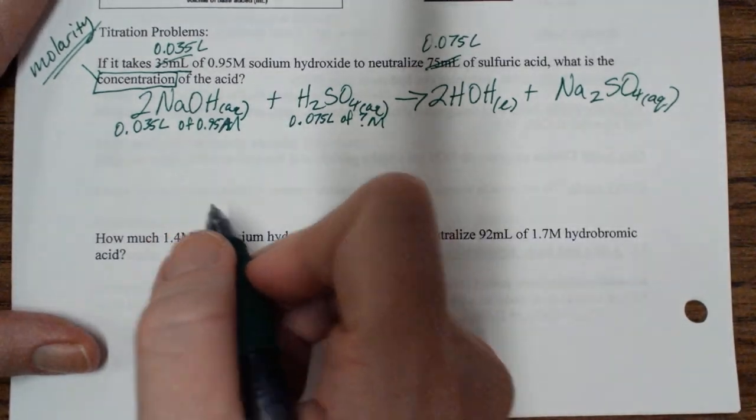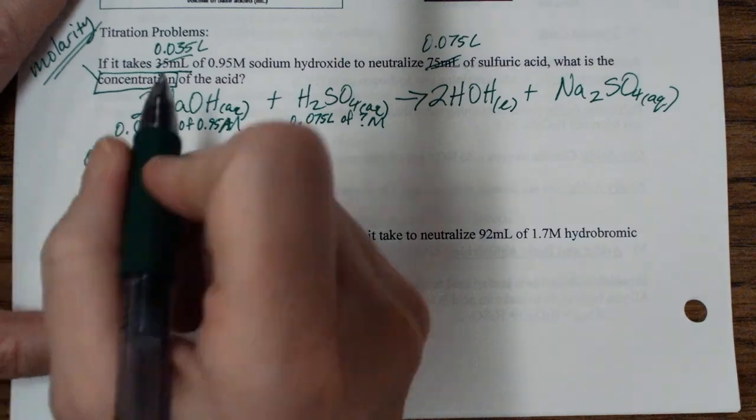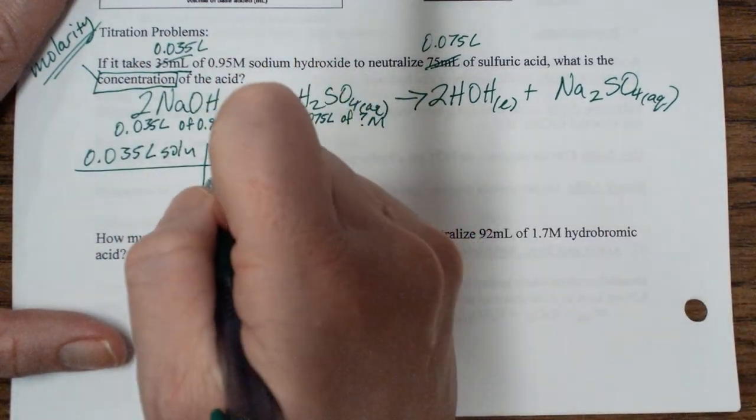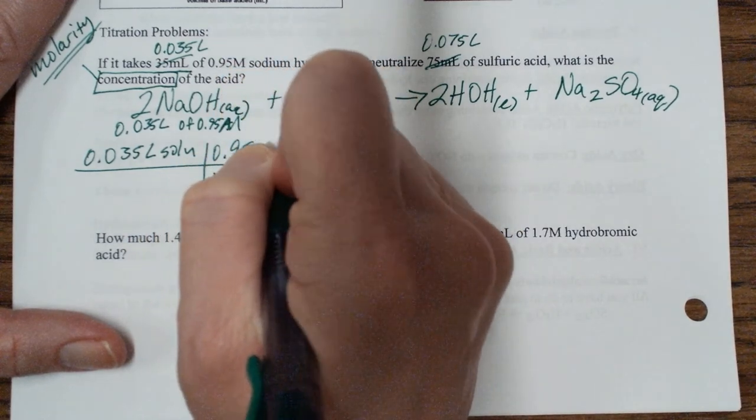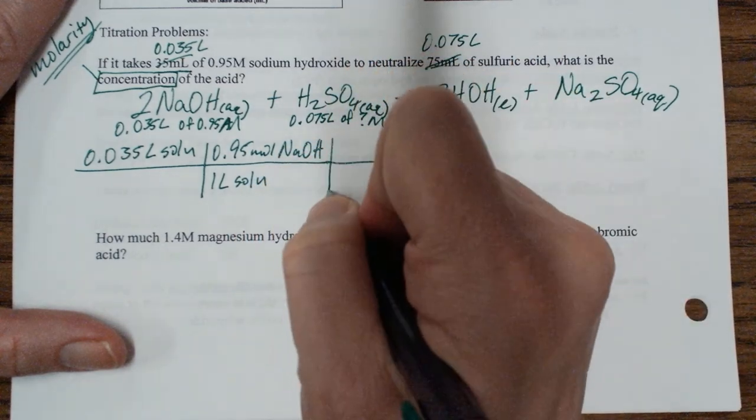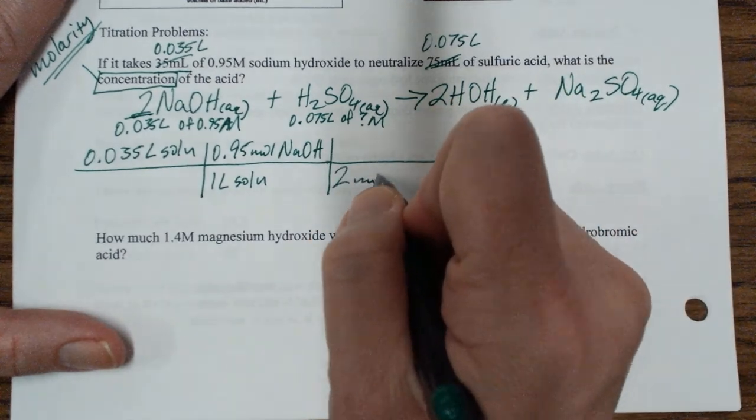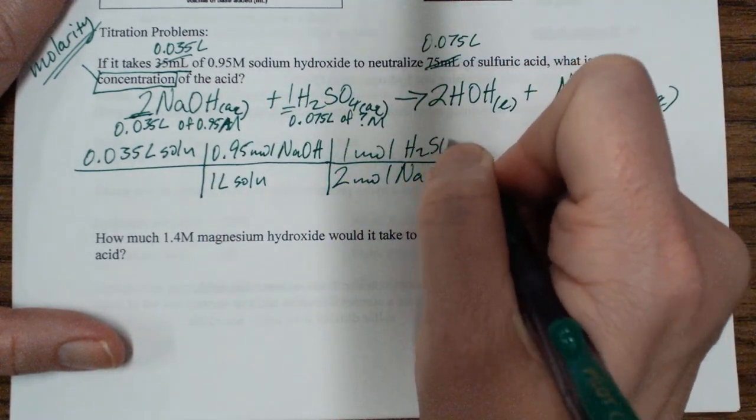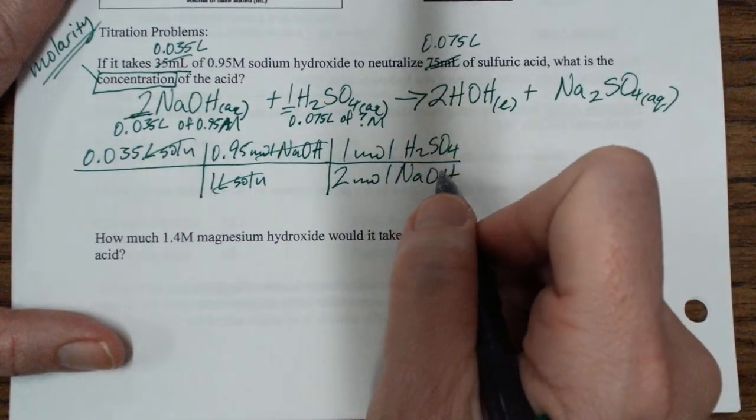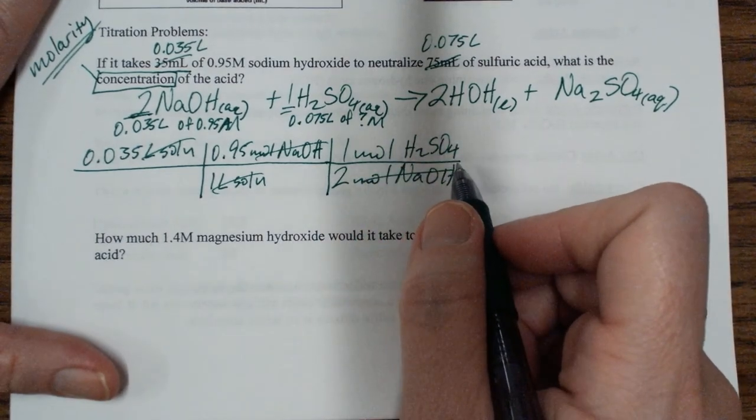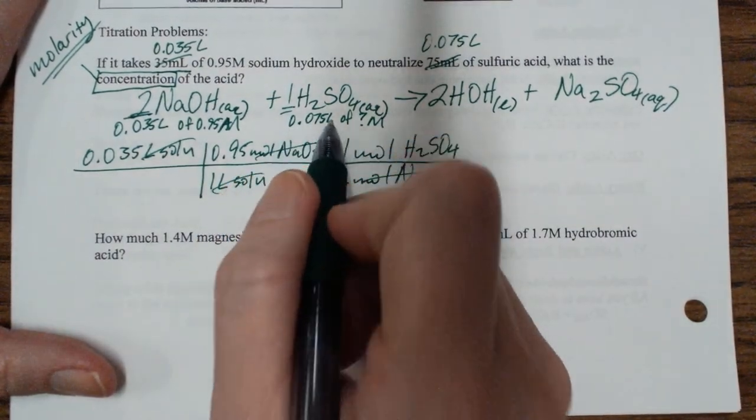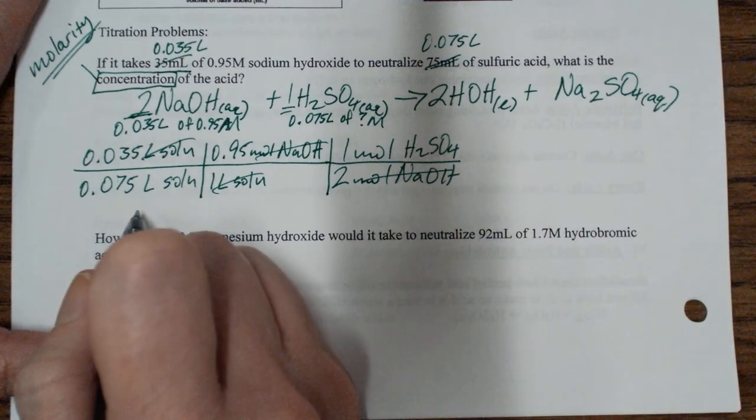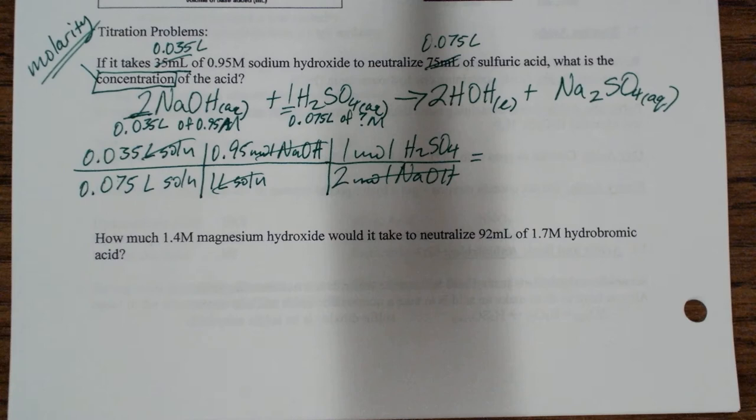So I start with the thing I know everything about, and I end with the thing I don't know everything about. I start with 0.035 liters of sodium hydroxide solution, basic solution. For every 1 liter of that solution, I have 0.95 moles of sodium hydroxide. For every 2 moles of sodium hydroxide, I require 1 mole of sulfuric acid. So now liters of solution will cancel, the moles of sodium hydroxide will cancel. I have moles of sulfuric acid on top, which is what I want for molarity, but I need liters on bottom. There's my liters of acid. I have 0.075 liters of acid solution. So I have moles of acid on top, I have liters of acidic solution on the bottom. And that's where I stop, and I put this in my calculator.